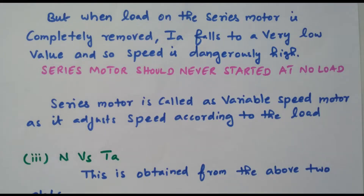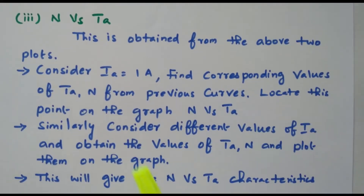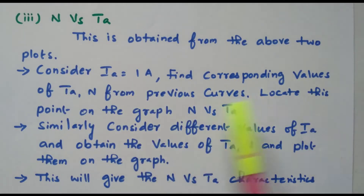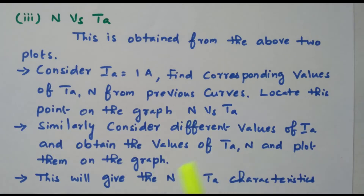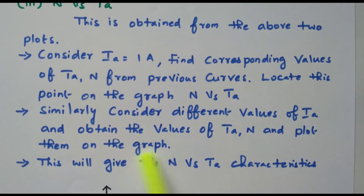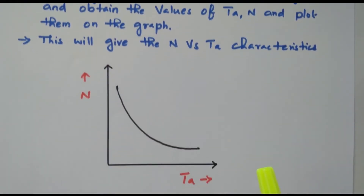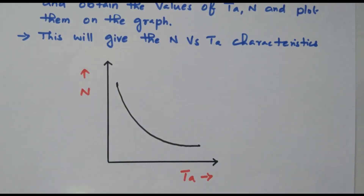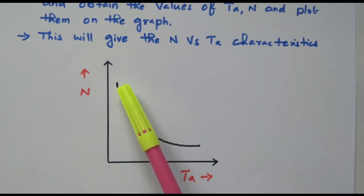Now the third characteristic: speed versus armature torque, N versus T_A. It is obtained from the above two plots. Take armature current equal to 1 ampere, find the corresponding values of T_A and N from the previous curves, and locate this point on the N versus T_A graph. Repeat for different values of I_A to obtain multiple points and plot them. This gives the N versus T_A characteristic, which shows that speed and torque are inversely proportional — when torque increases, speed decreases.